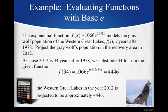Again, be very careful with your order of operations. The first thing we're going to do if we're going to do this piecewise is multiply 0.042 times 34. We're going to get this number, and then we're going to do e raised to the number we just got. Then last, we're going to multiply by 1066. This indicates that the gray wolf population in the western great lakes is projected to be approximately 4446.